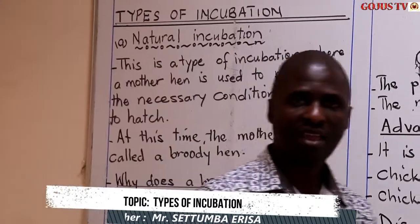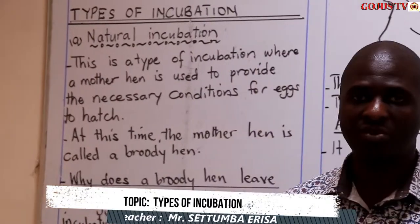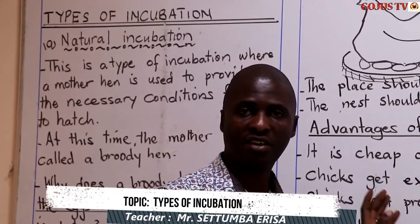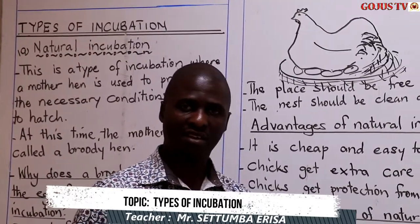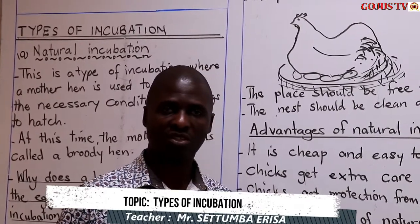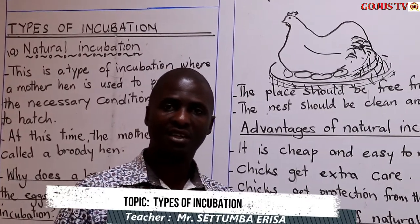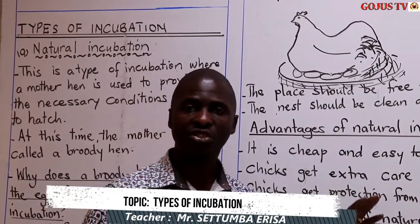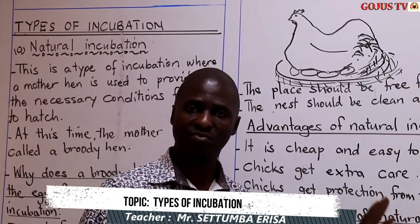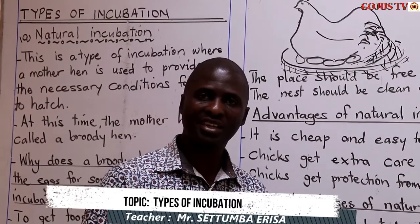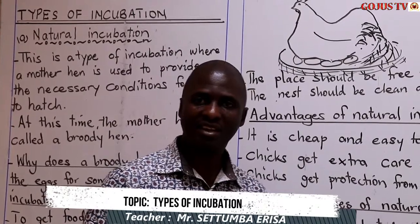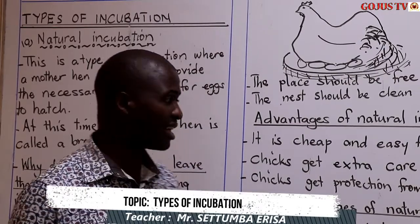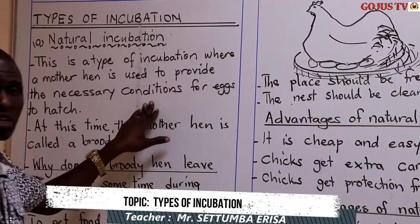What is natural incubation? This is the type of incubation where a mother hen is used to provide the necessary conditions for eggs to hatch. We use a mother hen. When we come to look at artificial incubation, we shall be looking at the use of machines. A machine that is used for hatching eggs is called an incubator. But this time our incubator is the mother hen. The mother hen is providing the warmth, the security, the protection to the eggs. So this is what we call natural incubation.